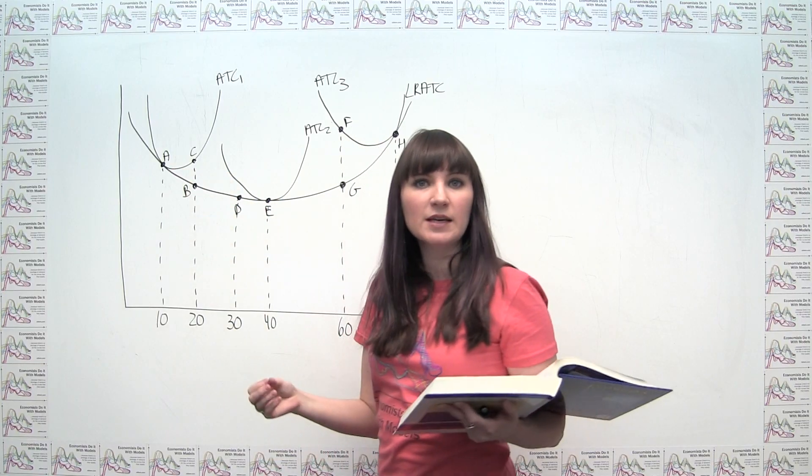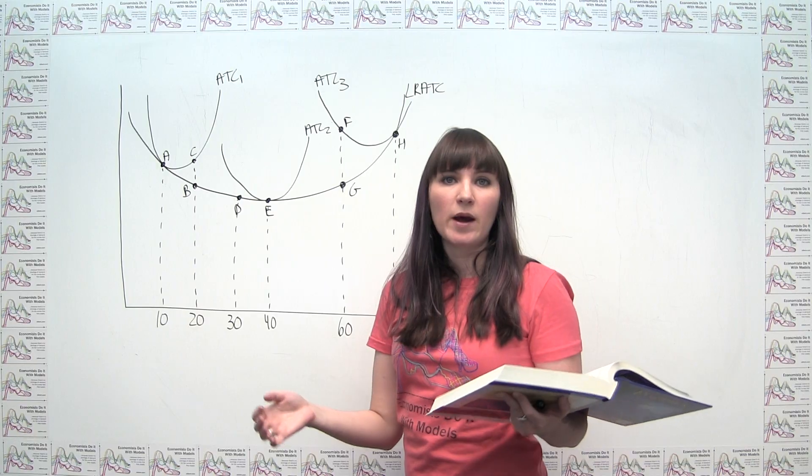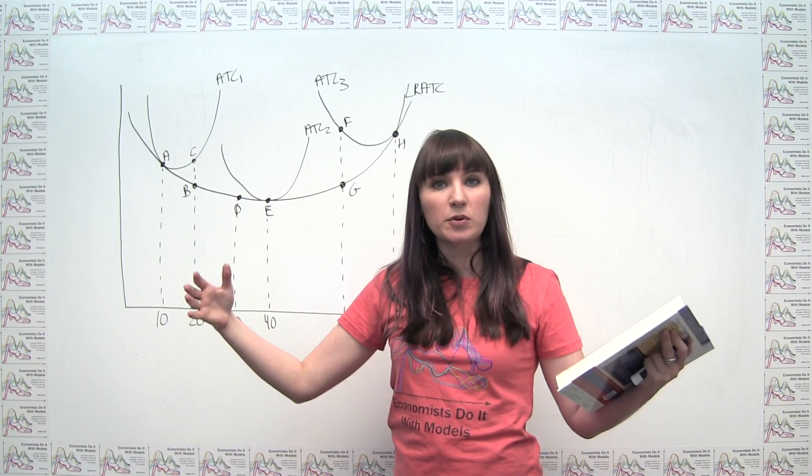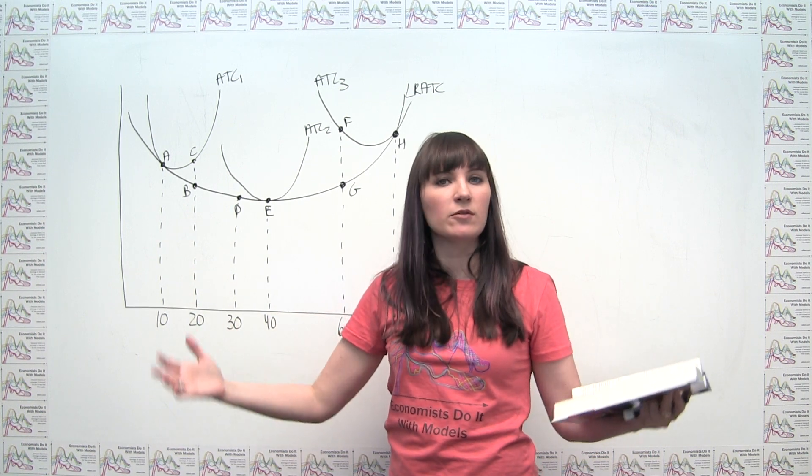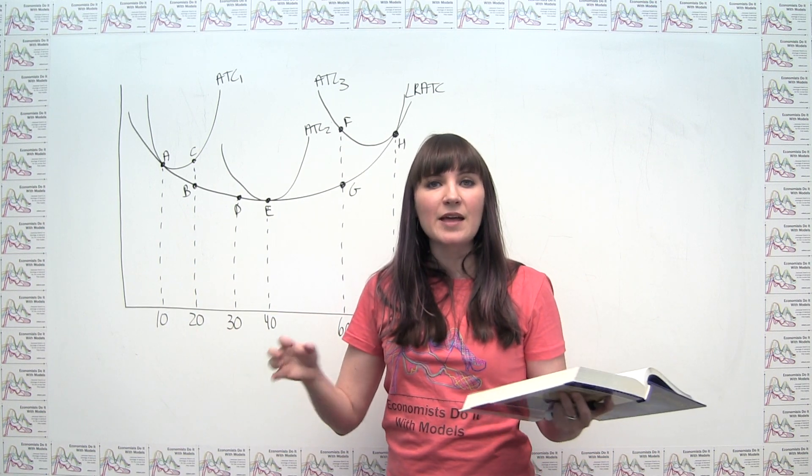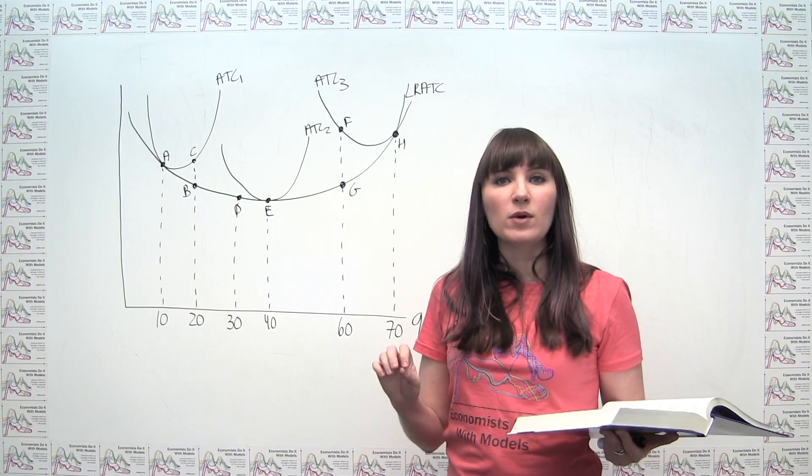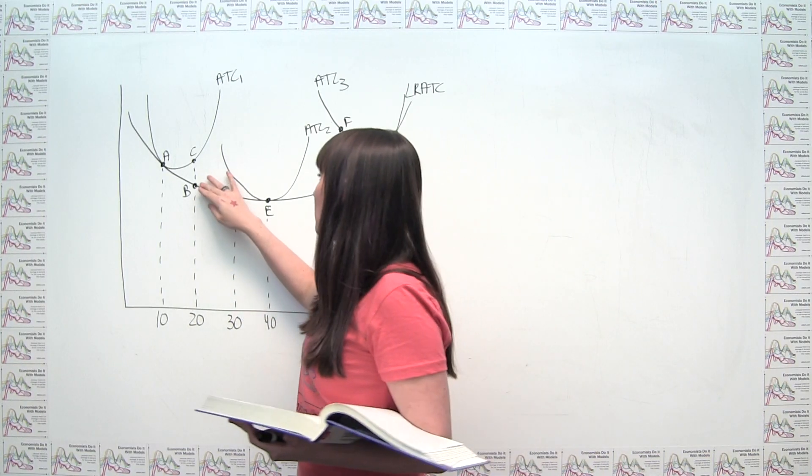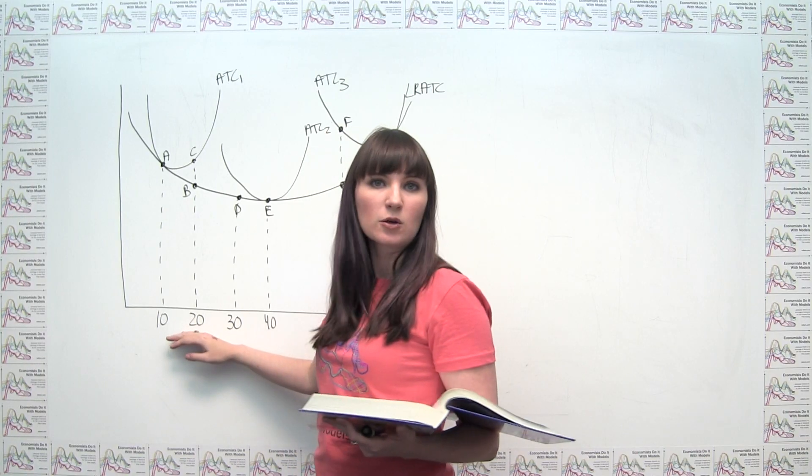We say, how does she get there? She gets there essentially by reorganizing, by changing the size of her plant, factory, kitchen, however you want to think about that, and thinking strategically about what the optimal mix of capital and labor is to minimize her cost of producing at this particular quantity.